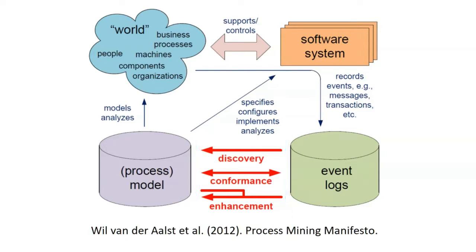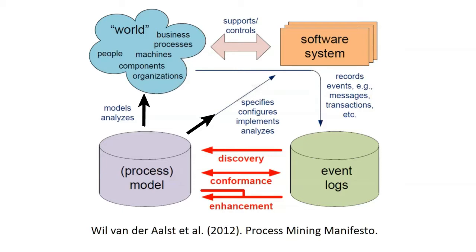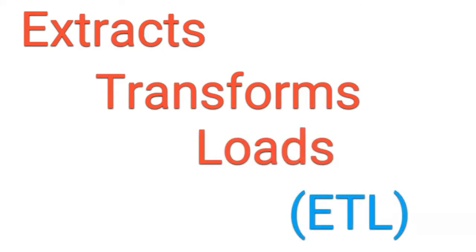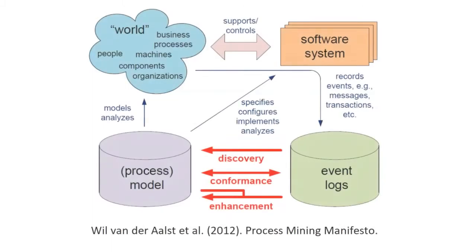This real-time data is then continuously compared to the process logic rules discussed throughout this course. The resulting process insights are then converted into actions. These process-driven actionable insights continuously guide the optimal allocation of real-world human and capital resources in order to produce the desired output. If we want to do this on an industrial scale, we need to create an infrastructure that continuously extracts, transforms, and loads the relevant data into the process mining application.